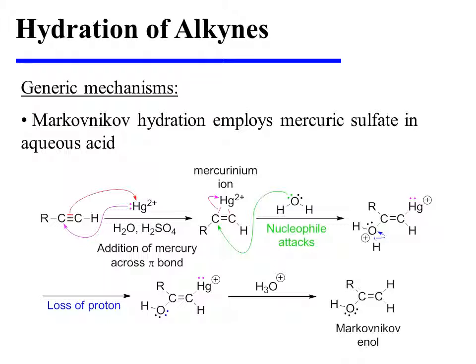An alkyne pi bond attacks the mercuric ion, and the mercury reciprocates by attacking the carbon of the alkyne that would otherwise have lost a bond. This forms a mercurinium ion, which is reminiscent of the intermediate seen in the oxymercuration-demercuration of alkenes.